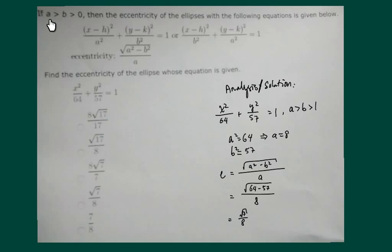In our case, it's pretty easy. A has to be bigger than B. For our case, it's 64 and 57.